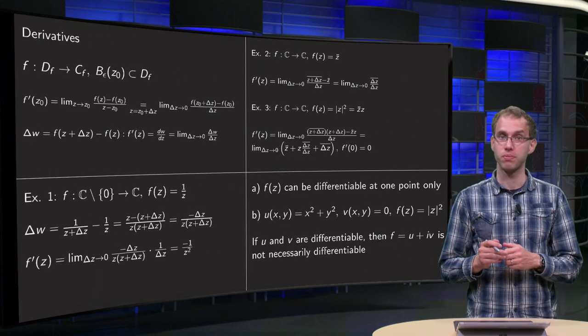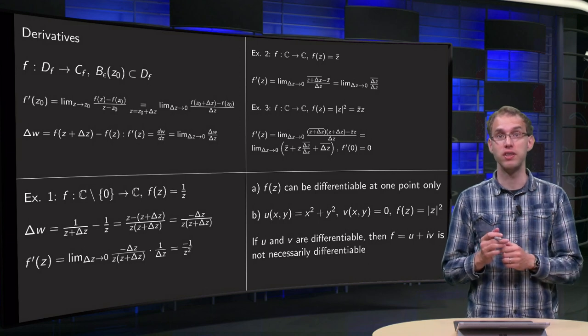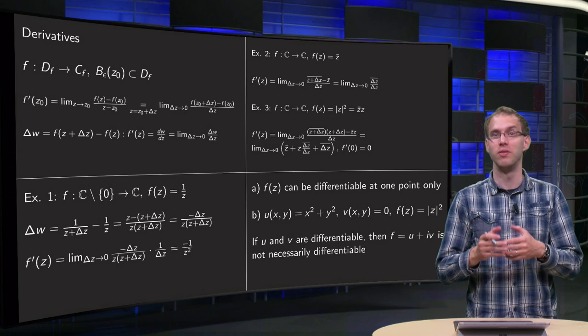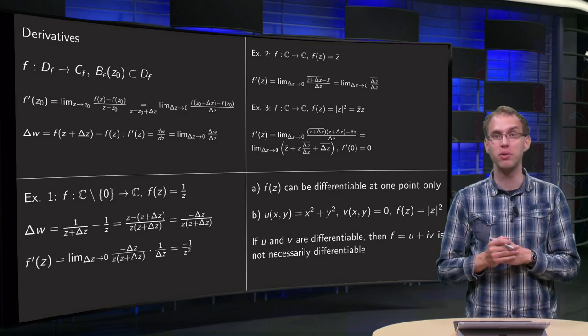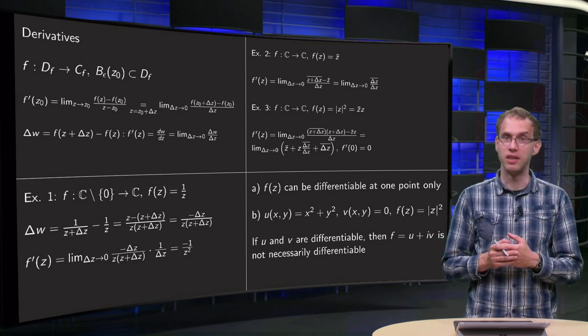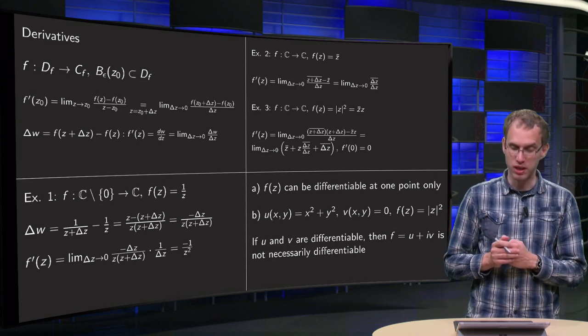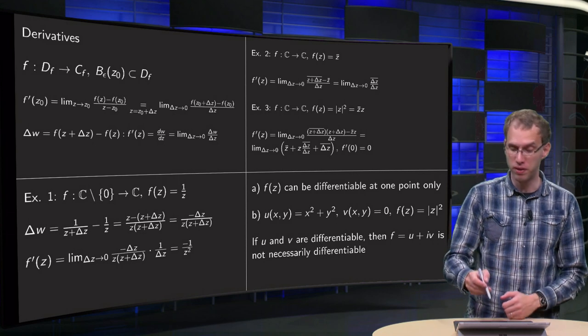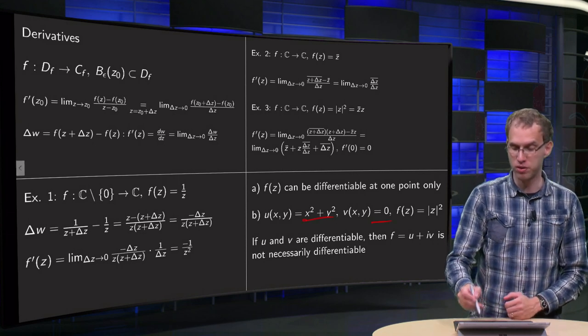So f prime only exists in 0 and then f prime equals 0. So what do we see? Well, in example 3 we see that f can be differentiable at one point only, which is a bit odd if you compare to the real case. And we see in the third example if you write f in terms of u and v, u equals x squared plus y squared and v equals 0.